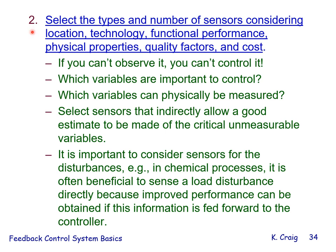Step 2: select the types and number of sensors considering location, technology, functional performance, physical properties, quality factors, and cost. If you can't observe it, you can't control it. Select sensors that allow a good estimate of critical unmeasurable variables. It is important to consider sensors for disturbances — for example, in chemical processes it is often beneficial to sense a load disturbance directly because improved performance can be obtained if this information is fed forward to the controller, which is disturbance-compensated open-loop feedforward control.